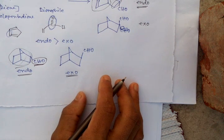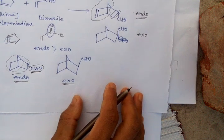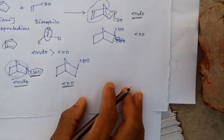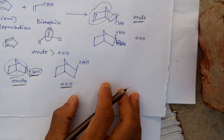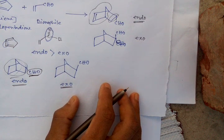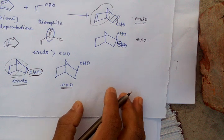And third criteria of product selectivity is stereoselectivity. I will discuss stereoselectivity in another part. So this part is very important. Thanks for watching.